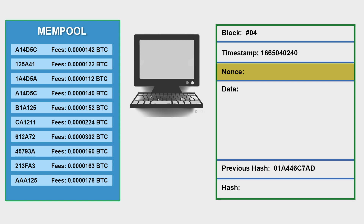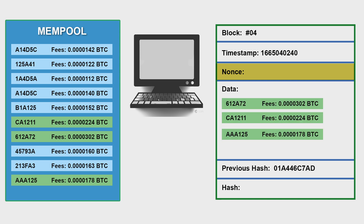The person can put a higher fee or lower fee — it's their choice. From the miner's perspective, he will receive more reward by including transactions with higher fees. So of course he will pick the transactions having higher fees — this one, this one, and this one — since he can only pick three transactions in our case. This is how transactions come into the block.